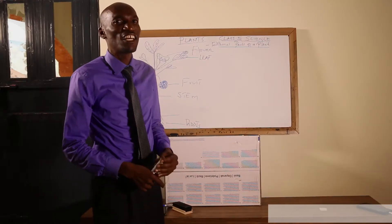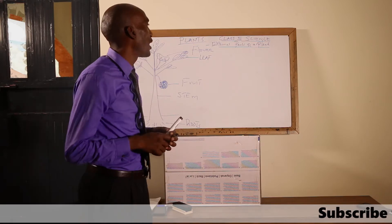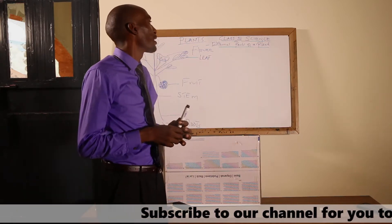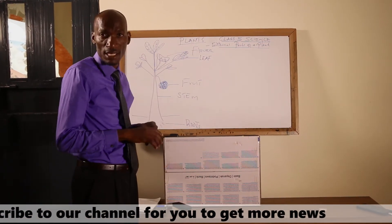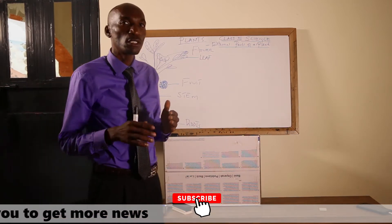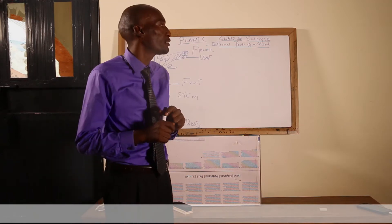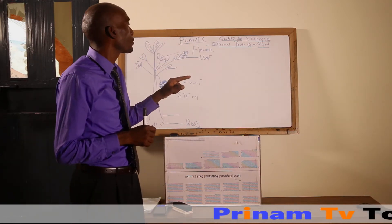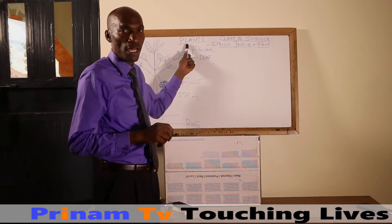How are you learners? I hope you will enjoy my lesson today. Today I'm going to teach Class 5 Science, and in Class 5 Science we are going to learn about plants. In Class 4 you learned about living things and non-living things, and in living things there are animals and plants. Today we are not going to focus on animals but we are going to learn about plants.